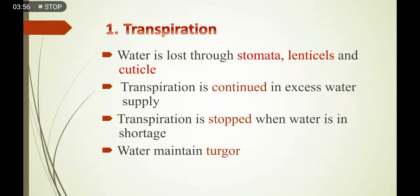اس طرح سے transpiration کے ذریعے plants اپنی body سے اضافی پانی کو خارج کر لیتے ہیں، اور اس کے ساتھ ساتھ stomata کی opening اور closing کے ذریعے wilting اور body کی upright structure کو بھی turgor pressure maintain کر کے برقرار رکھتے ہیں۔